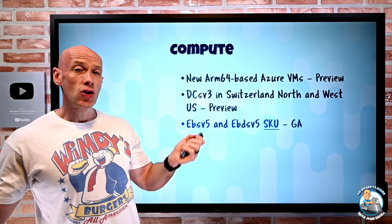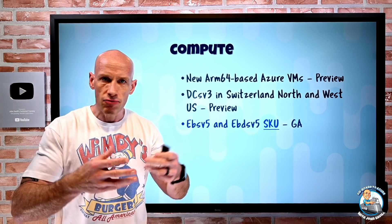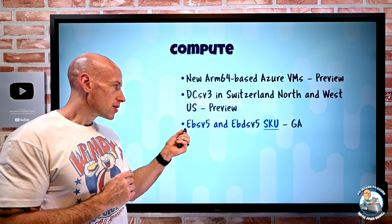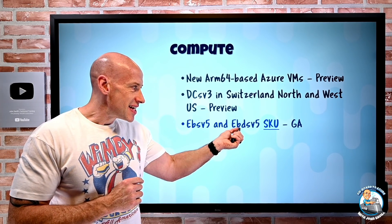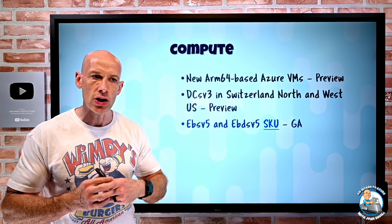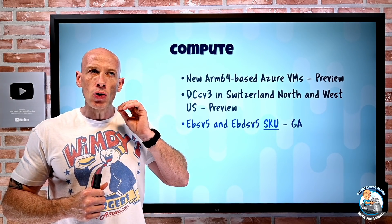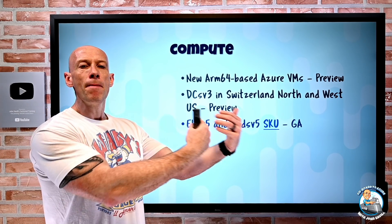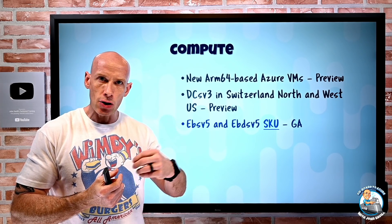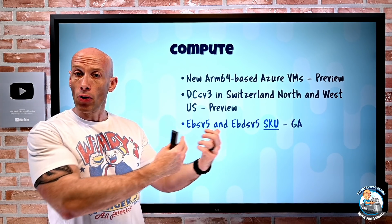New VM SKUs have gone GA. The latest memory-intensive E-series is the EV5. What you'll now see are these EB SKUs — specifically EBS V5 and EBD SV5. The D means it has temporary local storage and cache, whereas without the D it does not have that local temporary storage. This is all about needing a bigger amount of storage IOPS and throughput. When you connect managed disks, your virtual machine has a certain amount of IOPS and throughput.